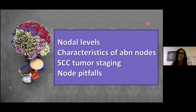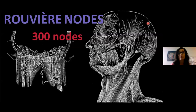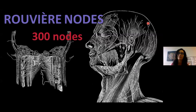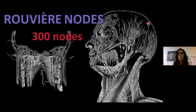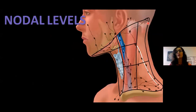Let's start talking about lymph nodes in the neck. Ruvier was a French embryologist and anatomist who mapped out the lymph nodes in the neck in 1938. He wrote the seminal paper on this. There are around 300 nodes in the neck, and around 40% of the entire body's lymph nodes are in the neck — an awful lot in a very small space, which is another thing that makes head and neck feel complicated. We need to be really comfortable with nodal levels.